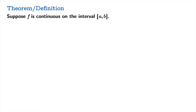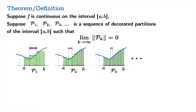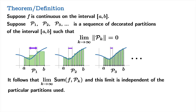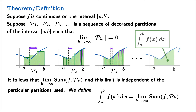Big theorem and definition: if f is continuous on the interval from a to b, and you have a sequence of partitions for which the size of the partitions goes to zero — meaning the width of the widest sub-interval goes to zero — then the Riemann sums computed using these partitions converge to a limit that is independent of the particular partitions used. We define the definite integral to be that limiting value, and we interpret it as the signed area under f on the interval from a to b. At heart, definite integrals are limits of Riemann sums.